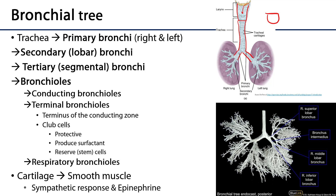The primary bronchi, or main stem bronchi, are the right and the left. The right tends to be a little larger and more vertically oriented, whereas the left tends to be smaller in diameter and more obliquely oriented. Those primary bronchi divide into secondary bronchi, which are known as the lobar bronchi because they serve the lobes of the lung. The right lung typically has three lobes and three secondary bronchi; the left lung has two lobes and two secondary bronchi.